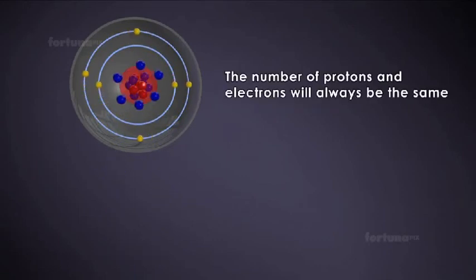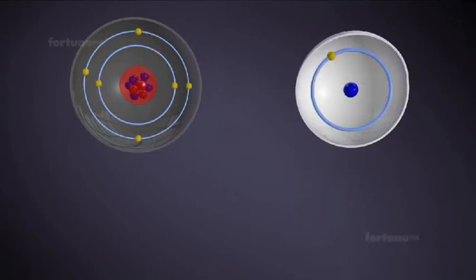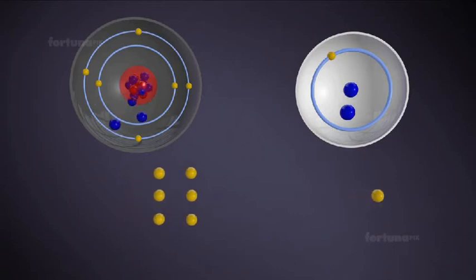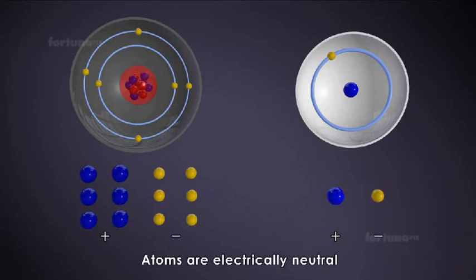Interestingly, in any atom, the number of protons and electrons will always be the same. In our example, a hydrogen atom will have one electron, and a carbon atom will have six electrons. Because the positively charged protons are balanced by equal numbers of negatively charged electrons, atoms are electrically neutral.